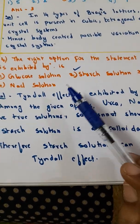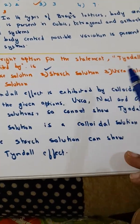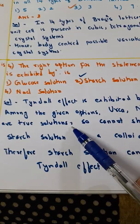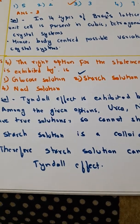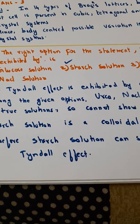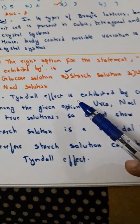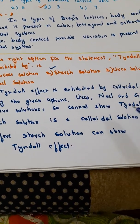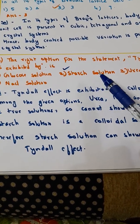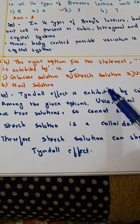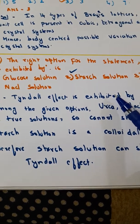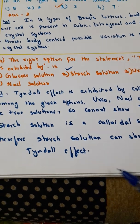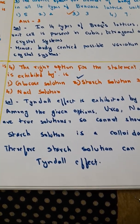In the given options, glucose, then urea, and NaCl solution - these are all true solutions. True solutions they do not show Tyndall effect. Only starch solution is a colloidal solution. Only one option, starch solution alone is a colloidal solution. Only colloidal solutions can show Tyndall effect. Therefore, starch solution can show Tyndall effect.